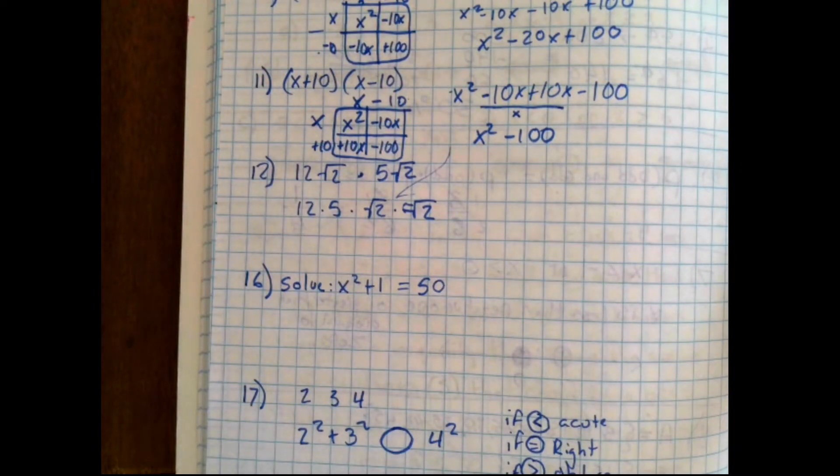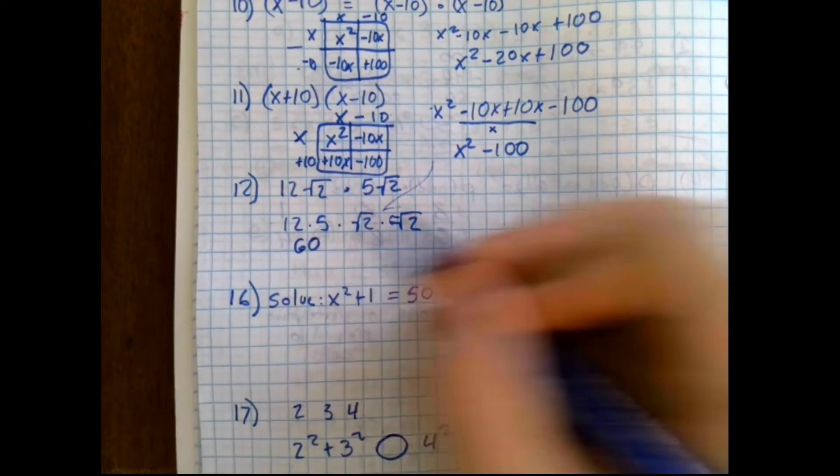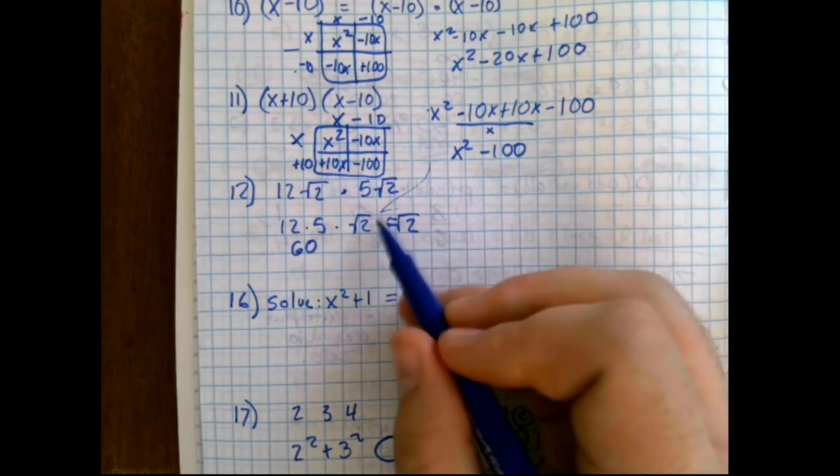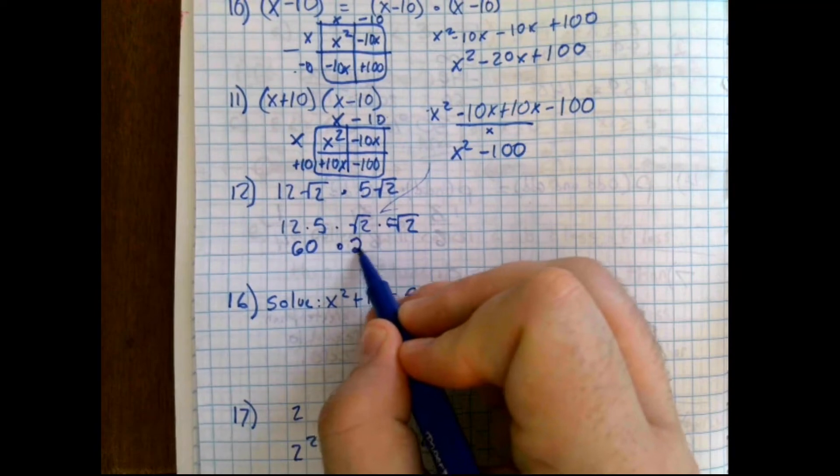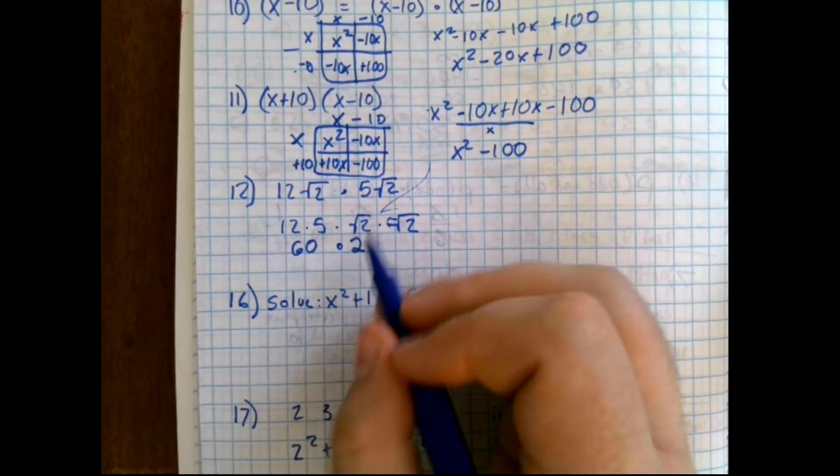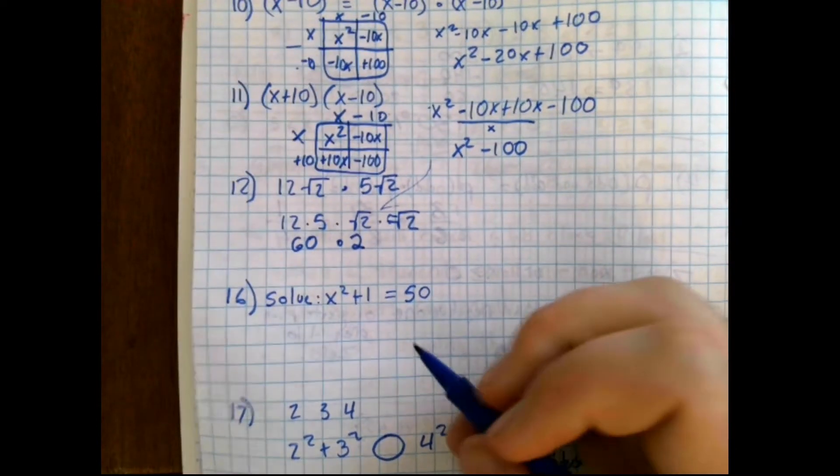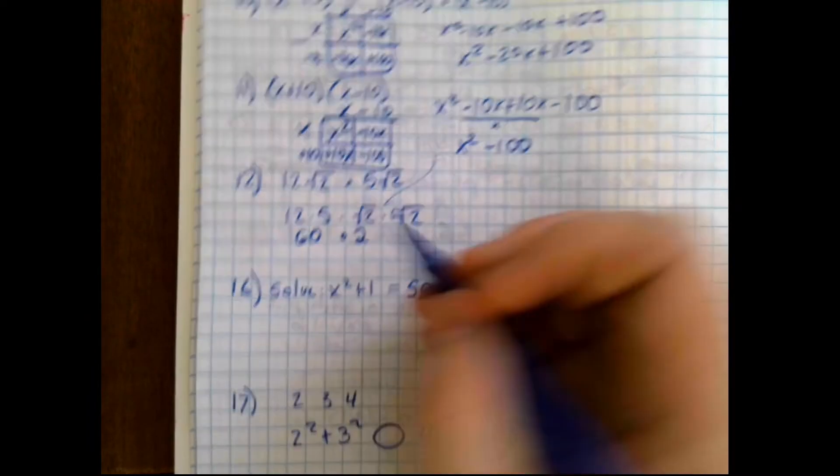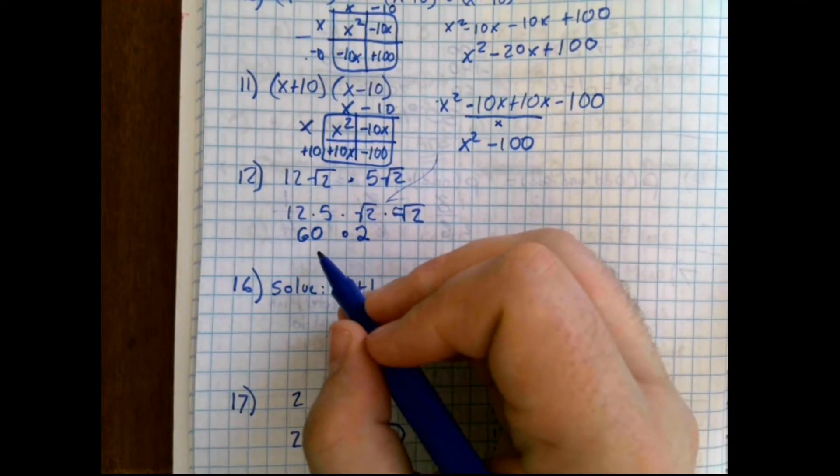Now, question 12 asks 12 times root 2 times 5 times root 2. Now, what I've done first is I've used the commutative property to commute those numbers around. I put the 12 by the 5 because 12 times 5 is really easy. It's 60. I put the root 2 times root 2 because, remember, this will cancel out and just give us 2. Now, you should be able to do 60 times 2. The answer is 120.